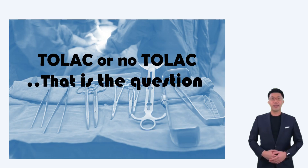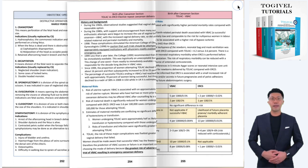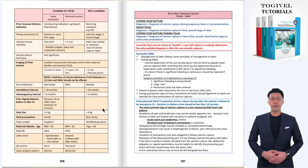Trial of Labor After Cesarean Section, TOLAC, is the U.S. used terminology, while Vaginal Birth After Cesarean Section, VBAC, is the U.K. used terminology. It may be a little bit confusing as to which patient is a candidate for TOLAC and which is not. The Togival Obstetrics Part 1 textbook, page 256, has an evidence-based table constructed to clear up the confusion, which we will be discussing in this short video.